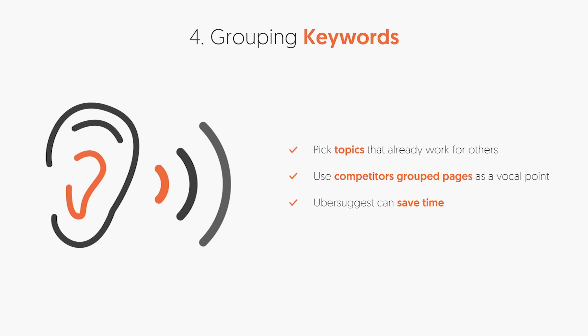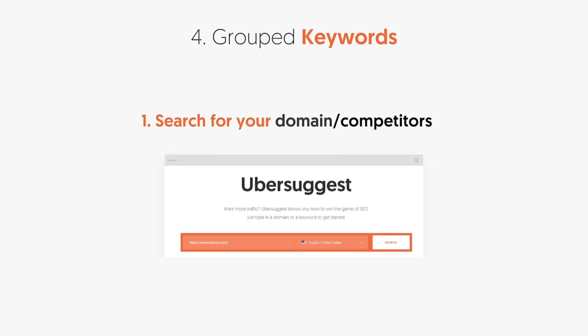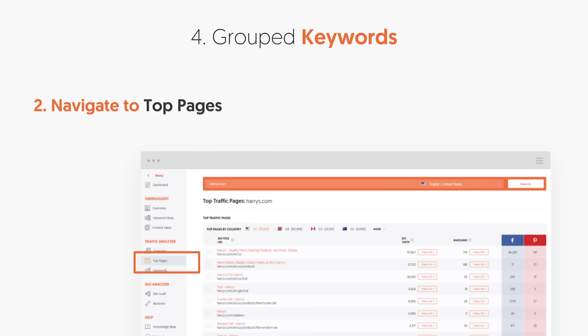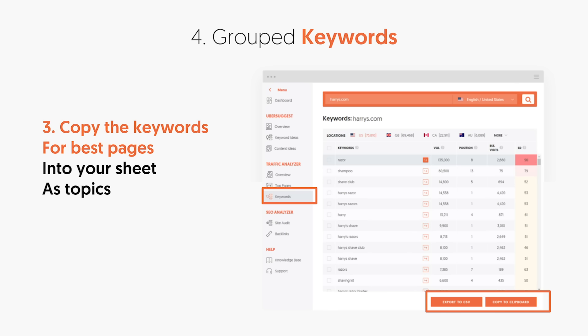Now that you have your keywords, it's all about grouping them and putting them in the right buckets. You can go to Ubersuggest, type in any one of your competitors' domains, and then in the navigation click on 'top pages.' This will show you all their top pages and how they're grouping keywords, because a page ranks for many keywords. Under estimated visits, you'll see a 'view all' button — when you click on it, you'll see all the keywords that your competition is using for that page. You can also go to the keywords report on the left-hand navigation to see all the keywords your competition is ranking for in one simple view.